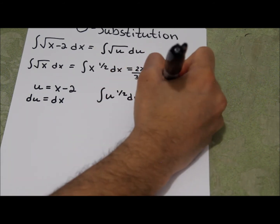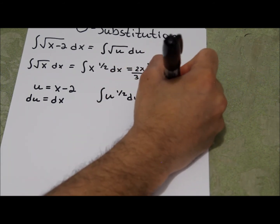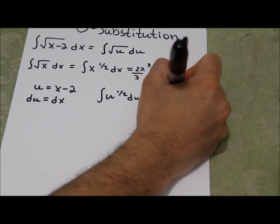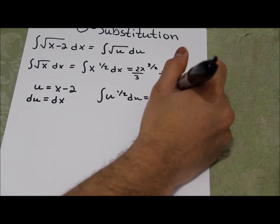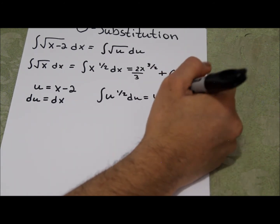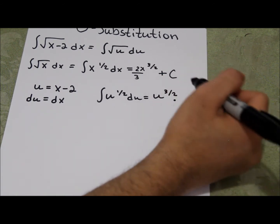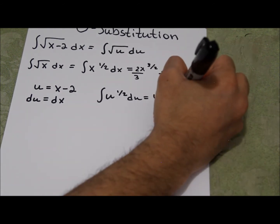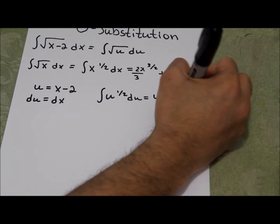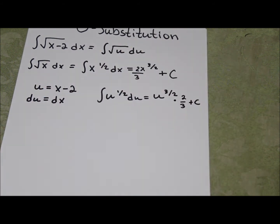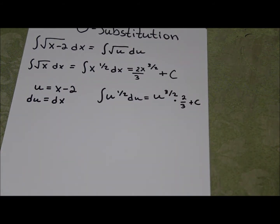We can rewrite it as u to the half du. Then we can just add 1 to the exponent, so it's 3 divided by 2. Multiply by the reciprocal of this because we're dividing by this number. So multiply by 2 divided by 3 and add a c because it is an indefinite integral.